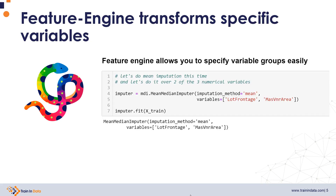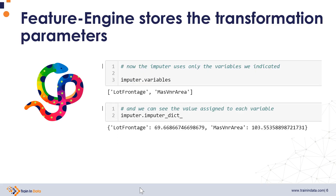Every Feature Engine transformer includes an argument called variables, where we can pass the list of variables that we wish to transform with that particular feature engineering technique. Therefore, it allows you to implement different techniques to different variable groups. Feature Engine transformers will store the variables that it needs to modify in one of its attributes, and it will also store the learned parameters needed to modify each one of the individual variables.